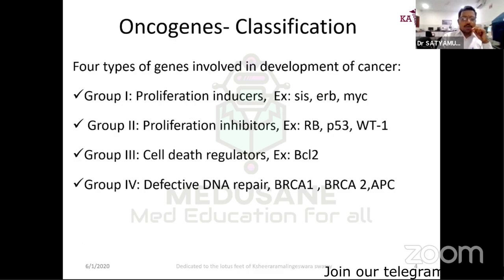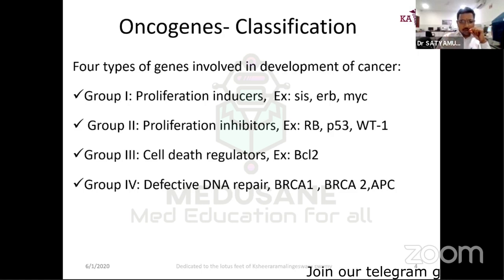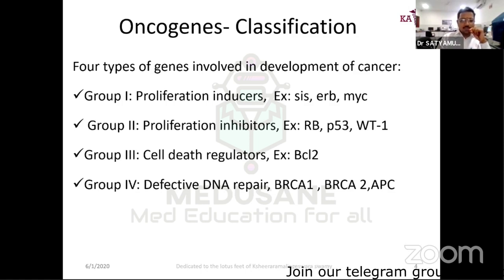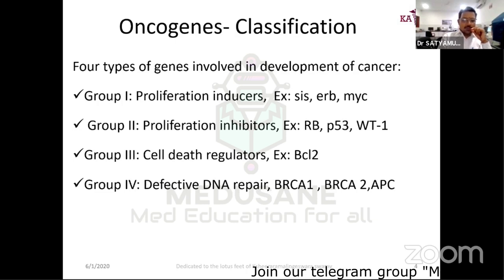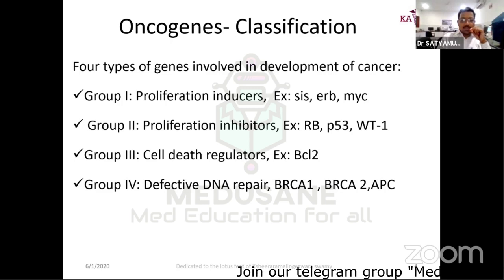Regarding types of genes involved in development of cancer: Group 1 is proliferation inducers — once activated they induce proliferation and cause cancer. Group 2 is proliferation inhibitors, commonly known as tumor suppressor genes. These tumor suppressor genes have an inverse effect: if they are on, it is good; if they are switched off, tumor suppression stops and tumor progression starts.